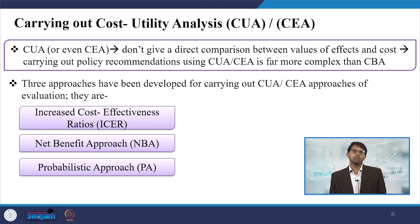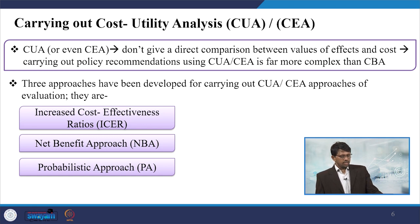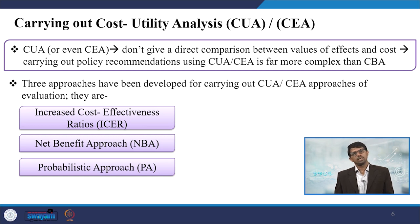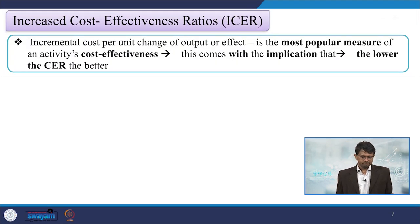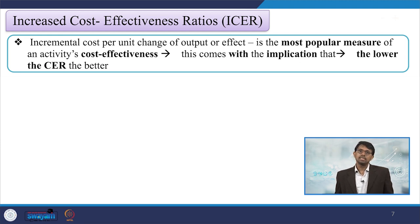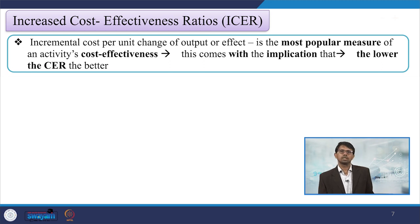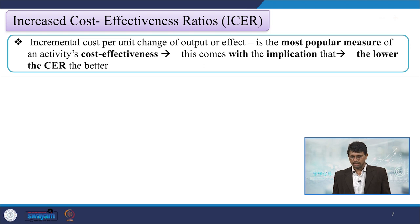Three approaches have been developed for carrying out CUA evaluation. The first is ICER — the Incremental Cost-Effectiveness Ratio. The second is the Net Benefit Approach (NBA), and the third is the Probabilistic Approach. The probabilistic approach is difficult to estimate in terms of its probability value. We will discuss this at the end and focus first on ICER.